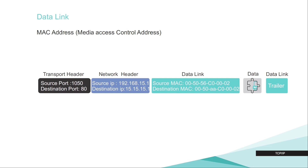Then the data goes to the data link layer. We have the transport layer header, the network layer header, and the data itself. When the data arrives at the data link layer, it adds its own header. The most important field in the data link layer is something called the MAC address, or Media Access Control address. In the data link layer, we see the source MAC address, the destination MAC address, plus something called the data link trailer.